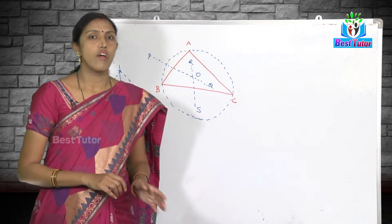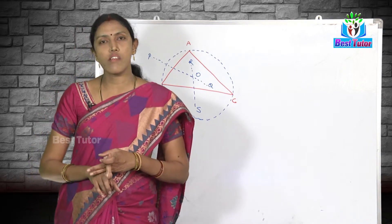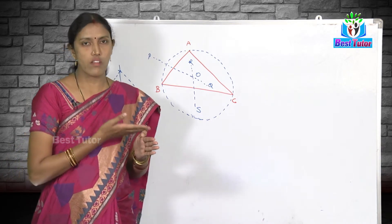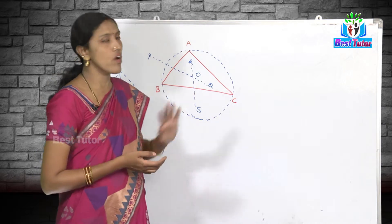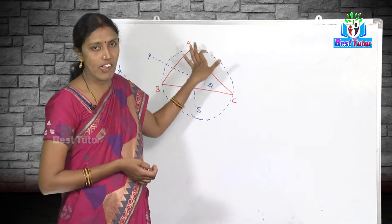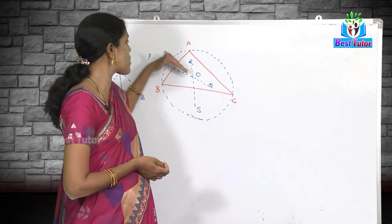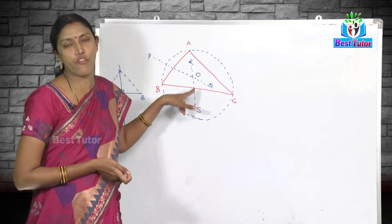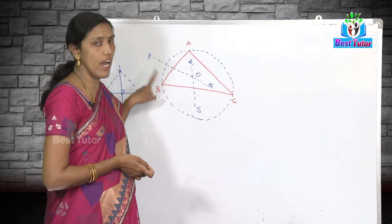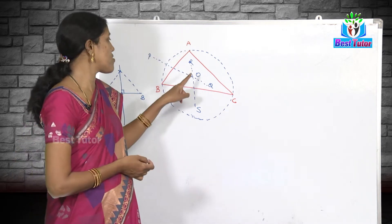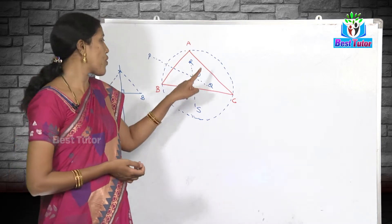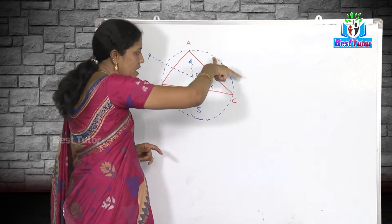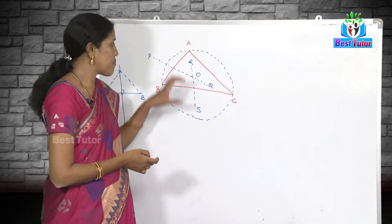Let me quickly recap. The statement of the theorem: one and only one circle can pass through three non-collinear points. Those three points do not lie on the same straight line. I drew line segments AB, BC, and AC, then the perpendicular bisector of AB and the perpendicular bisector of BC. Every point on the perpendicular bisector of AB is equidistant from A and B, so OA equals OB. Since O also lies on the perpendicular bisector of BC, OB equals OC. Drawing a circle with OA as radius passes through B and C.